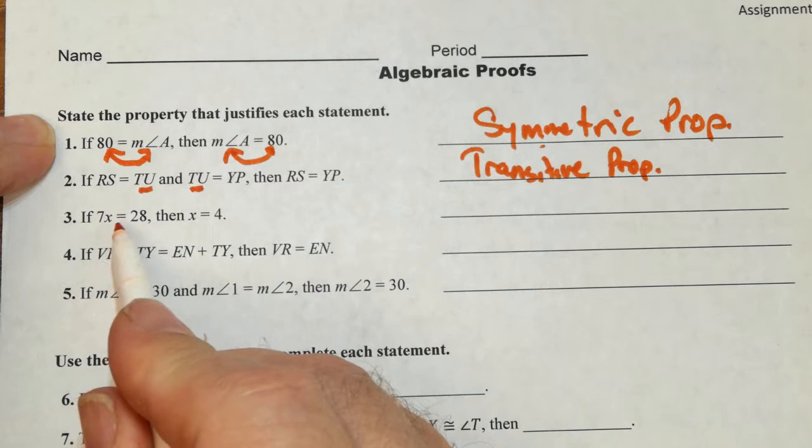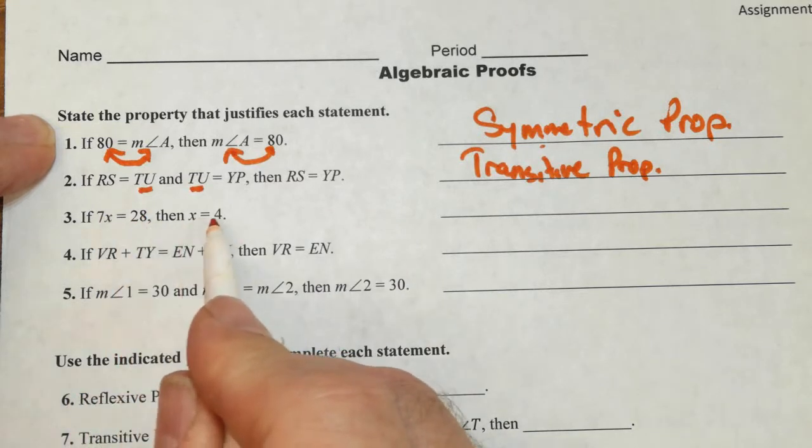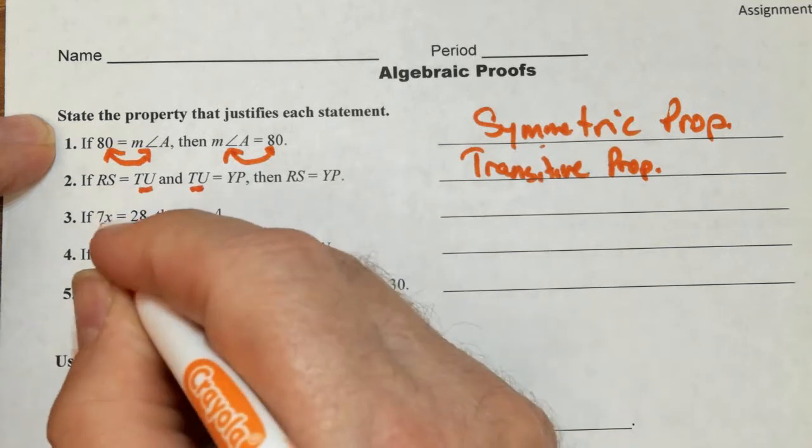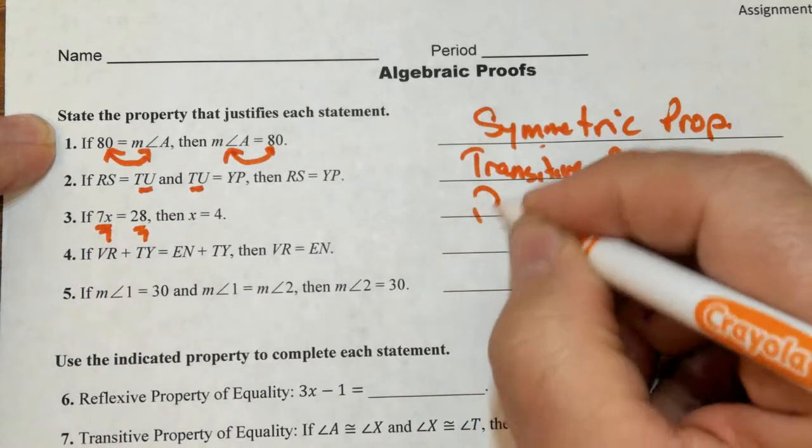Right here we're solving for x. So if 7x equals 28 and x equals 4, then we had to divide by 7. This is division property.